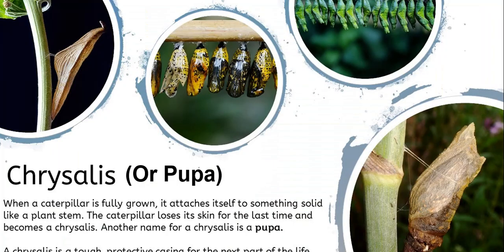After the caterpillar stage — where they eat as many leaves as they can, think of the very hungry caterpillar — when fully grown, the caterpillar attaches itself to something solid, like a plant stem or a sturdy leaf. The caterpillar then loses its skin for the last time and becomes a chrysalis, which is another name for the pupa stage.